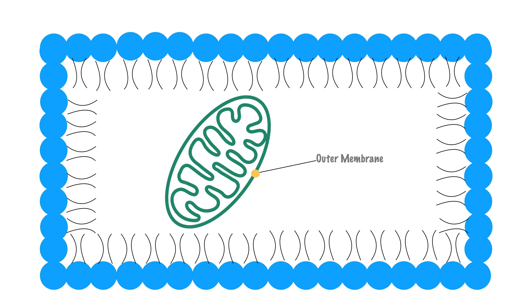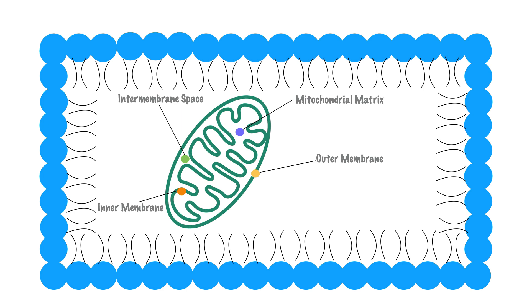Secondly, we have the inner membrane, which is a phospholipid bilayer located inside the mitochondria that forms folds we call cristae. Between the outer membrane and the inner membrane, we have the intermembrane space. And last but not least, we have the mitochondrial matrix, which is the innermost component of the mitochondria and contains a gel-like substance with enzymes, DNA, ribosomes, and other important molecules.